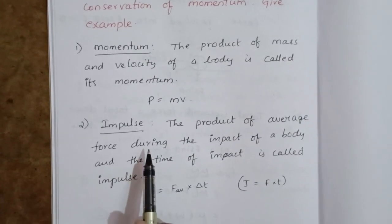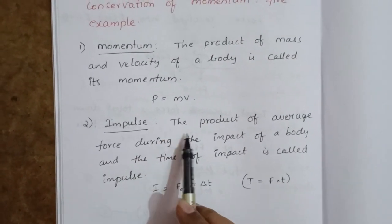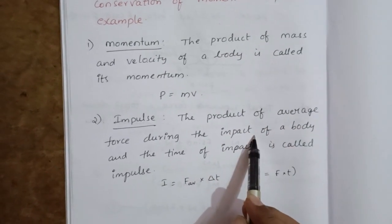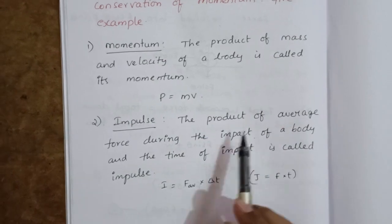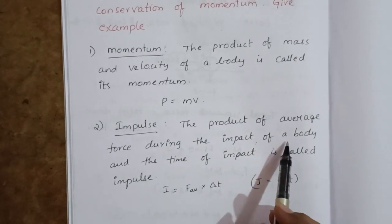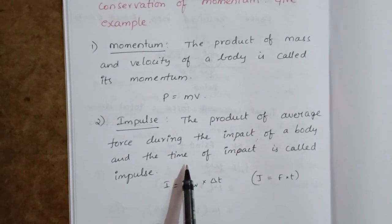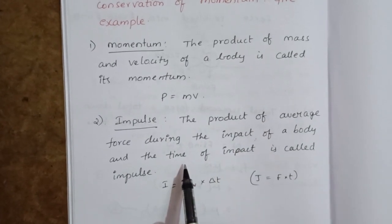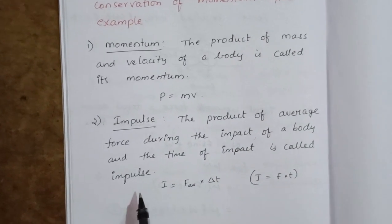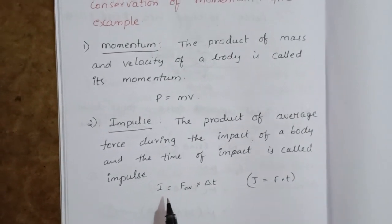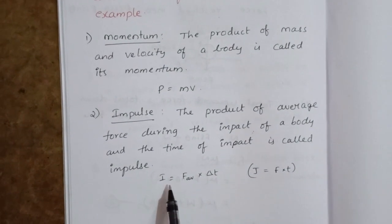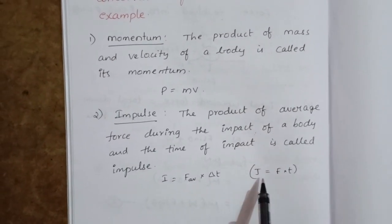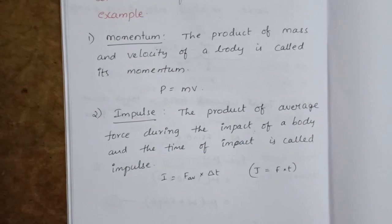Next, impulse. Impulse is the product of the average force during the impact and the time of impact. Impulse can be denoted with either I or J. So I equals average force into change in time, or J equals average force into time.